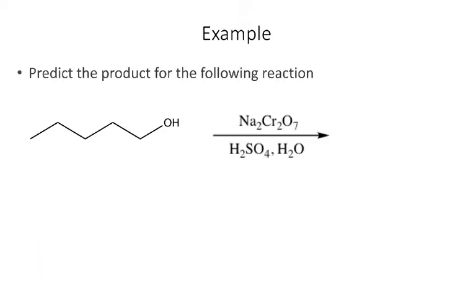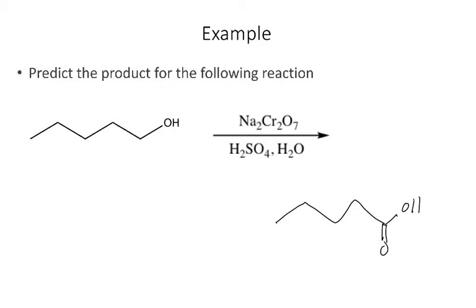Let's look at a couple of examples. Starting with a primary alcohol and using reagents that give chromic acid, the primary alcohol will be taken all the way to a carboxylic acid. When drawing the carboxylic acid product, be sure to keep the same number of carbons — so with five carbons in the starting material, the carboxylic acid product also has five carbons.